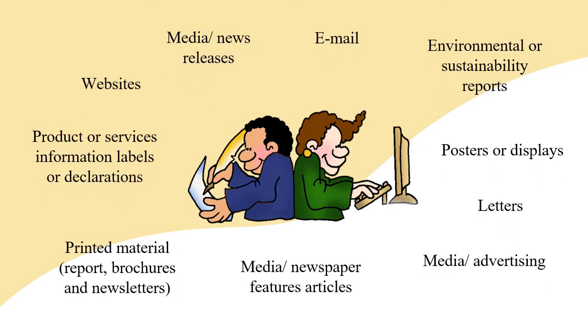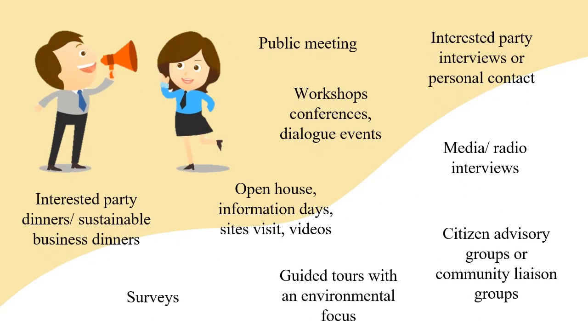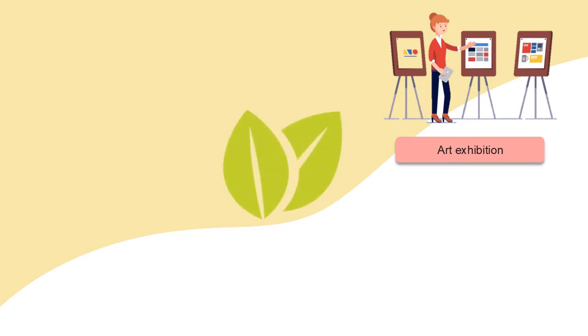Examples of written communication approaches and tools include letters and written materials like brochures and others. Verbal and other communication approaches and tools include public meetings, workshops, open houses, surveys and others. Other communication approaches and tools can include cooperative projects, sustainability agreements, and events and art exhibitions can also become one of the approaches of environmental communication.